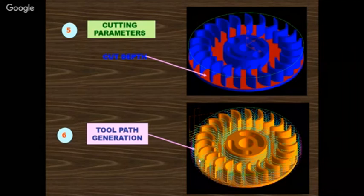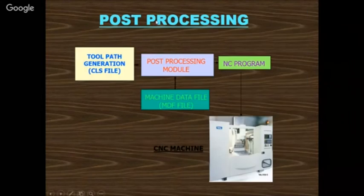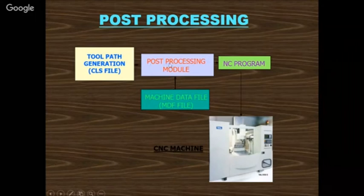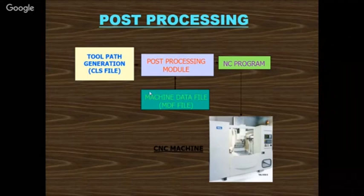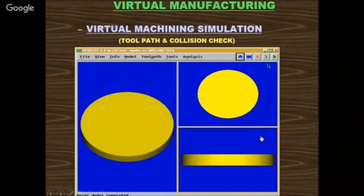After tool path generation, numerical control check allows verification of how much material has been removed and how much still needs to be removed from the workpiece — everything is visualized. Post-processing converts the CLS file to G-codes and M-codes, because the machine will not understand the CLS file. After post-processing, data is sent to the CNC machine. Commercially available softwares include Ideas, UG-CAM, SmartCAM, MasterCAM, and ProE.